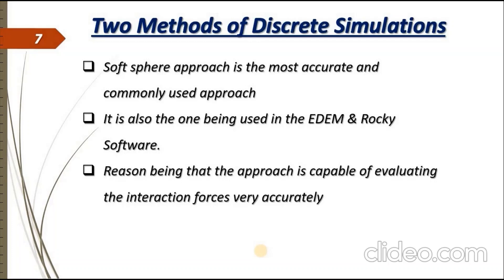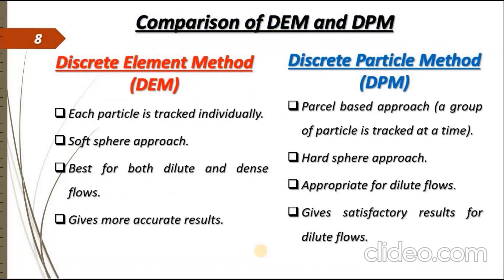Now let's compare the DPM methods, the Discrete Particle Method and the Discrete Element Method. DEM is a method in which each particle is tracked individually, while in contrast to the DPM, which is a parcel-based approach in which a group of particles are tracked at a time. DEM is based on the soft sphere approach while DPM is based on the hard sphere approach.